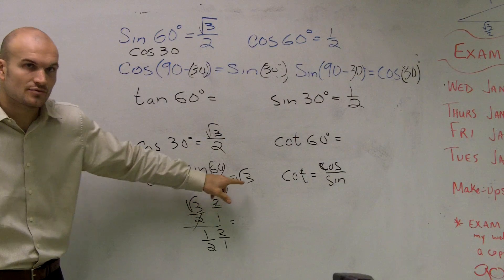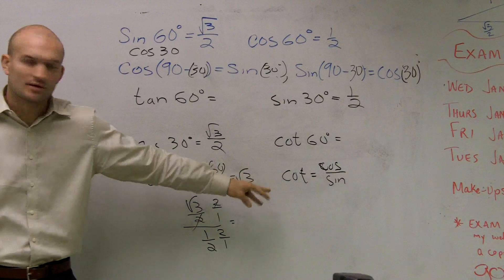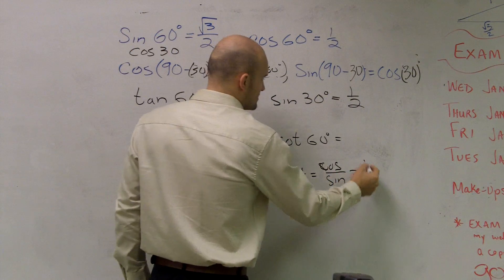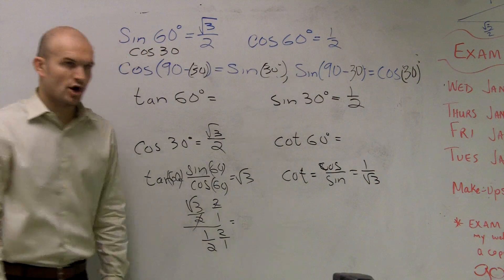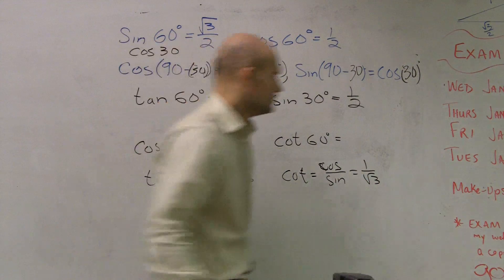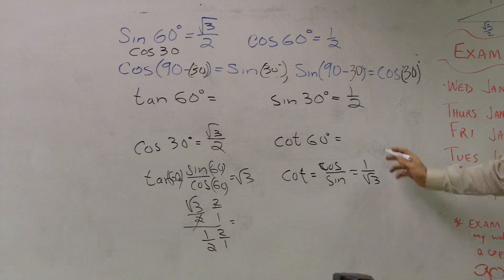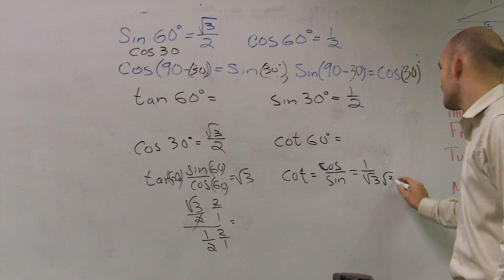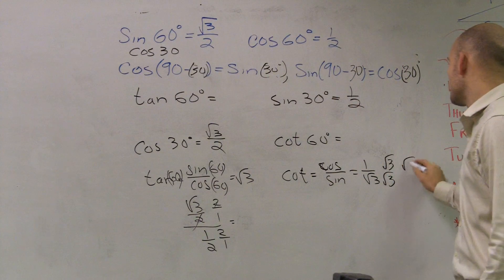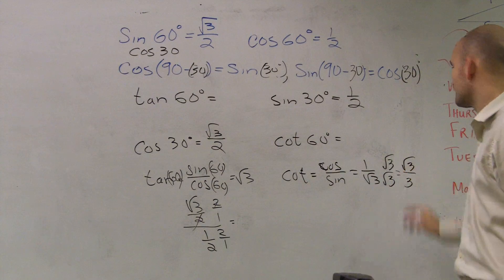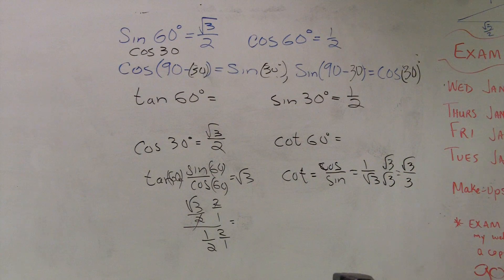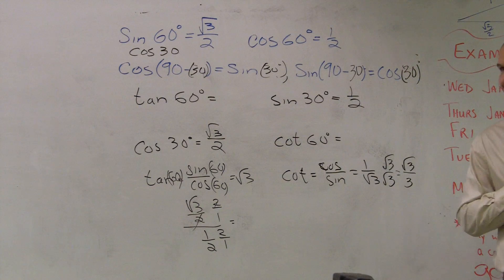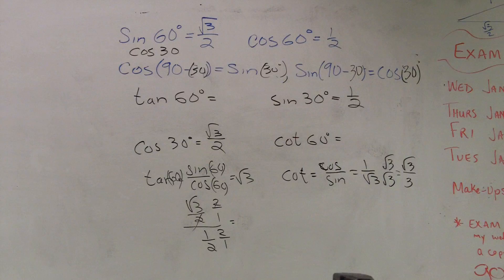So now the cotangent, you guys, is just the reciprocal of that. So I'll just write to simplify it. It's just going to be 1 over radical 3, which now I can rationalize the denominator and get radical 3 over 3. It's pretty difficult getting stuff, but like I said, guys, it's just doing...